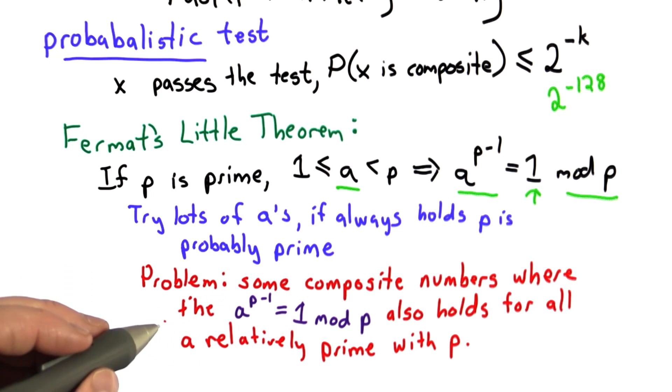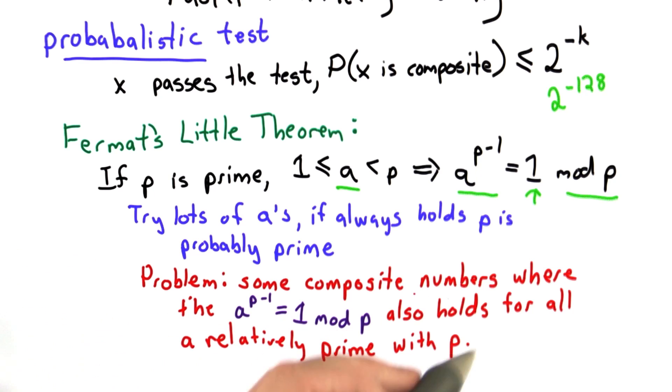So the problem is that there are some composite numbers that are known as Carmichael numbers, where this test also holds for most a values. Indeed it holds for all of the a values that are relatively prime with p.